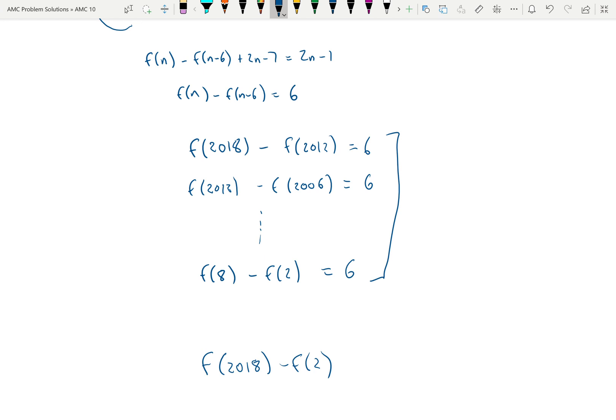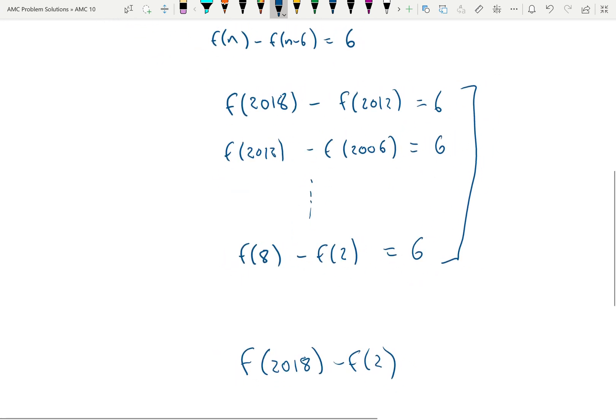And the way that we find all the 6s add up there is we just figure out how many jumps of 6 we have to do all the way to get to 2018 from 8. So first, 6 times 1 plus 2 is equal to 8. And then the next one is going to be 6 times 2 plus 2 is 14. So that's the next jump by 6. And you go all the way to 18, you can find out 6 times 336 plus 2 is 2018.